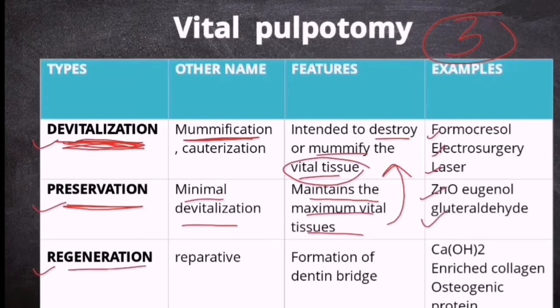And then the third category is regeneration. The other name is reparative. Which means the feature is they are trying to form a dentin bridge. And the examples are calcium hydroxide, enriched collagen, osteogenic protein, etc.